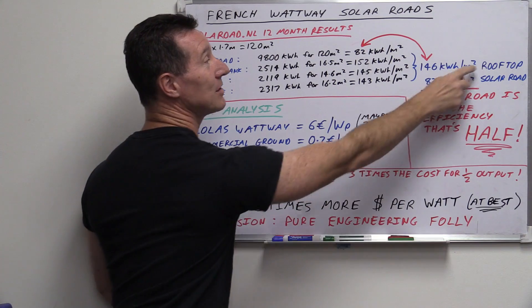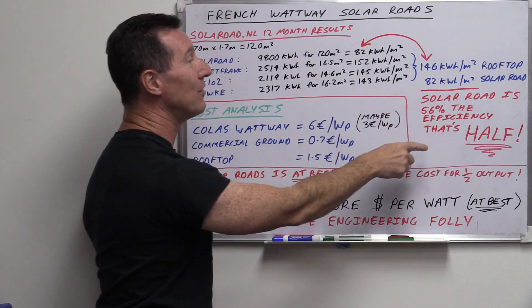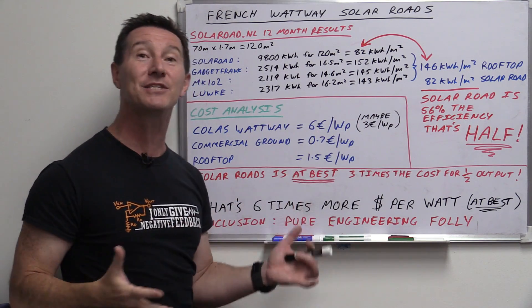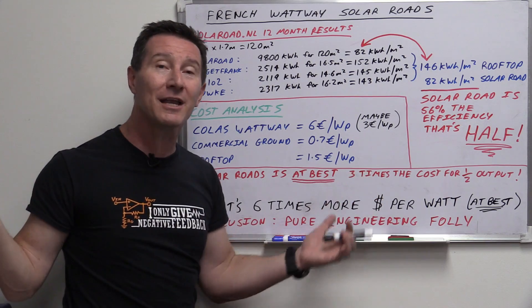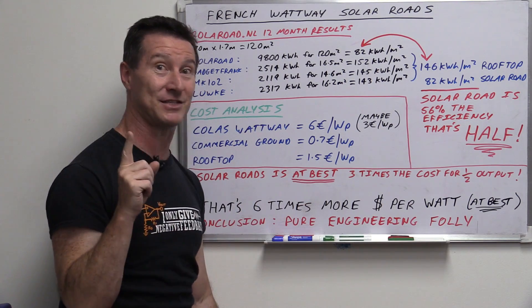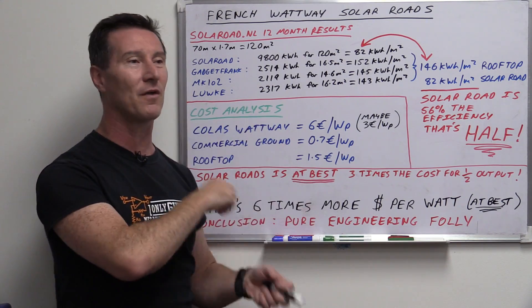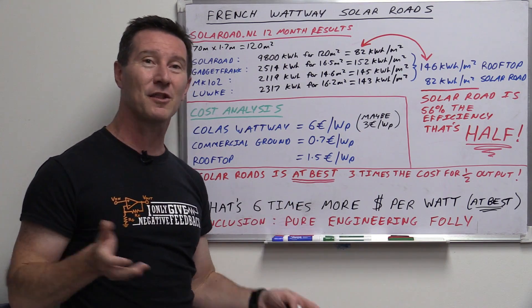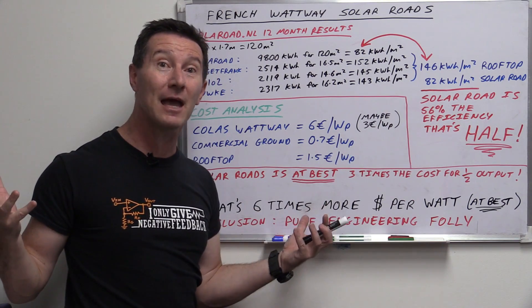Compare it, 146 kilowatt hours per square meter for the rooftop, 82 kilowatt hours per square meter for the solar road system. The solar road has 56% of the efficiency of a rooftop solar system. That's basically half, half the output. So right there, it's done and dusted. Why the hell would you pay for solar roads that give you half the output at best? Let alone when they're actually used as road surface, when there's traffic jams, dirt and grime, problems with maintenance. It's at best half the output. Why would you do it? It's stupid, but it gets worse.